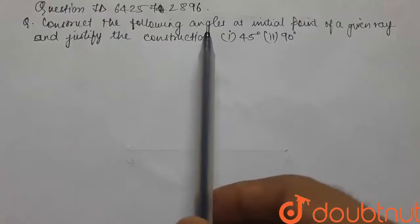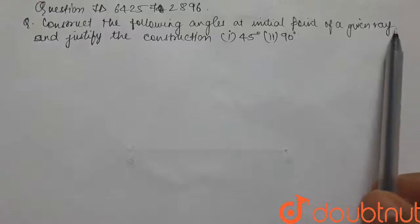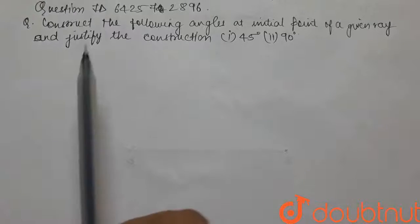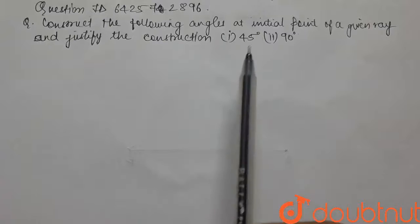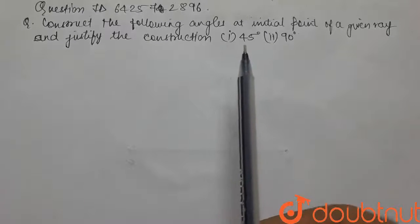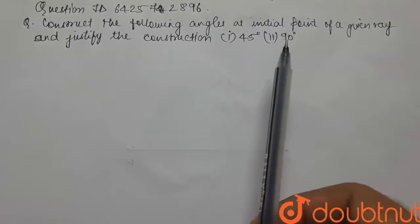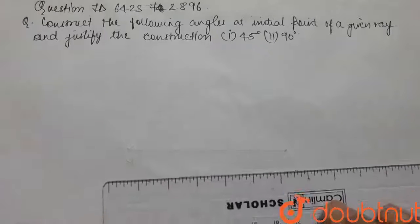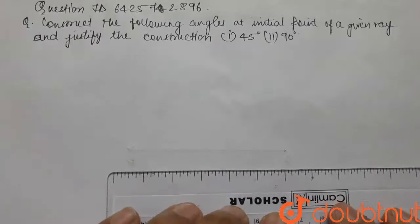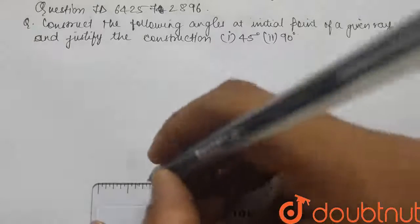Construct the following angles at the initial point of a given ray and then justify the construction. The angles that we have to make are 45 degrees and 90 degrees. So we will first make our ray and then we will start with the construction of the angles.